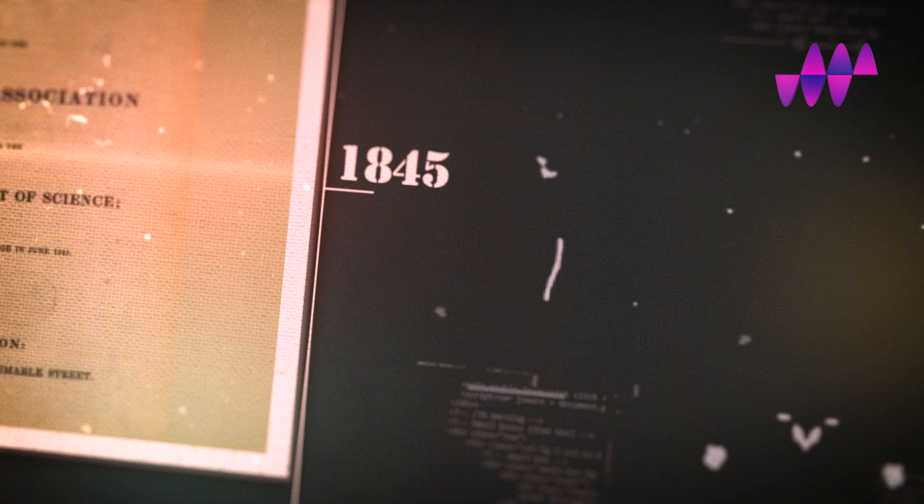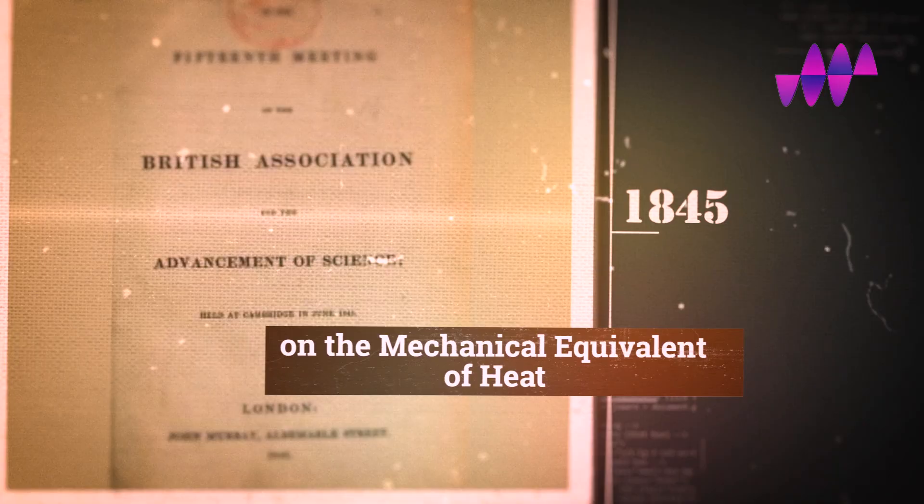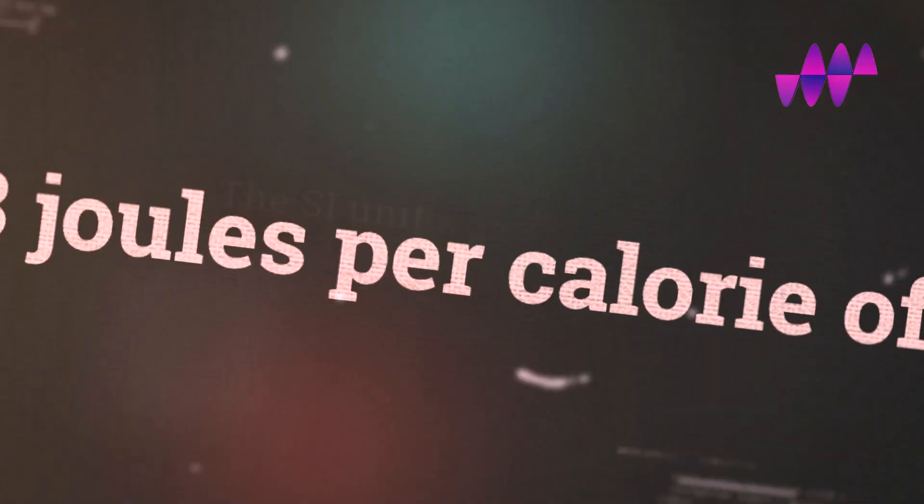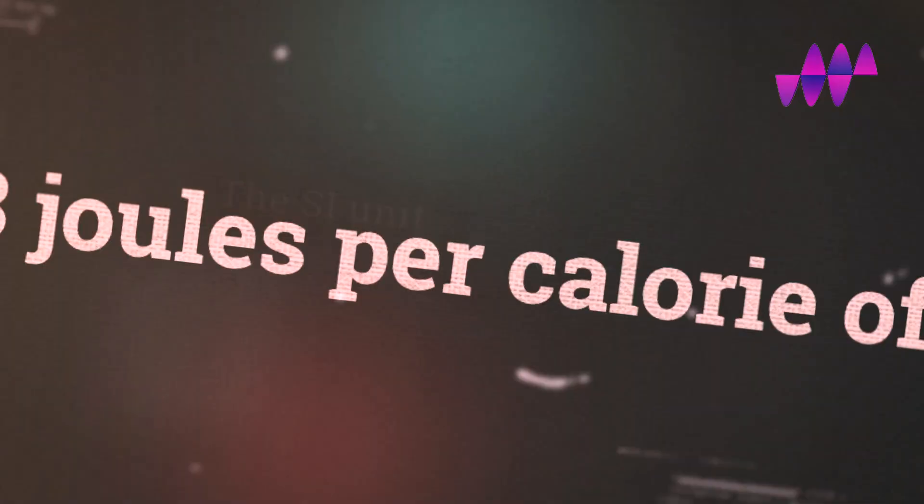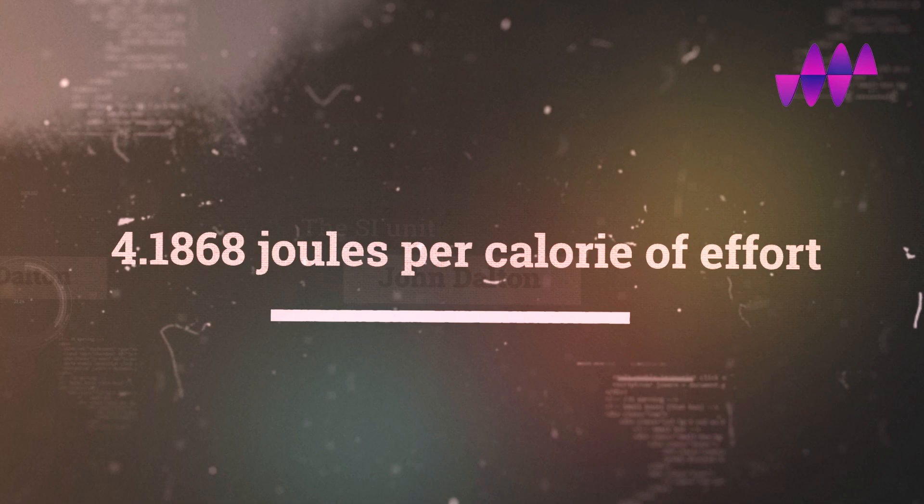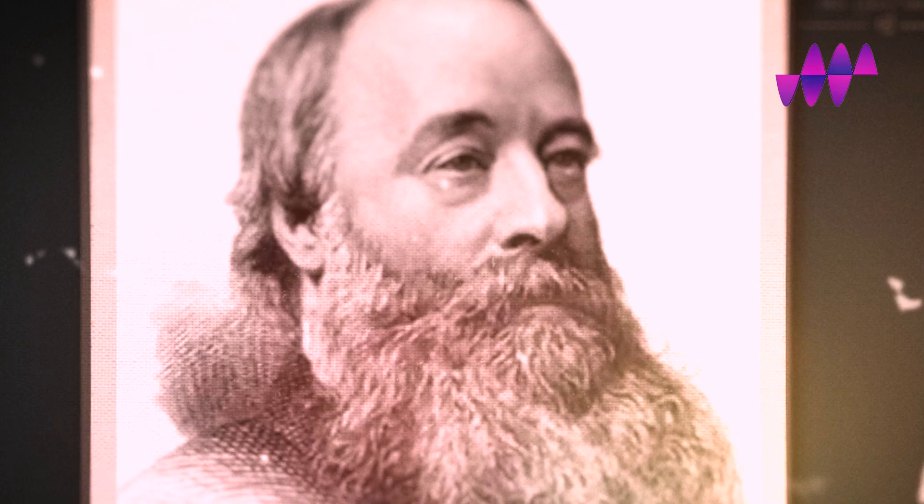In 1845, he delivered his paper on the mechanical equivalent of heat to the British Association in Cambridge. Joule computed this as 4.1868 joules per calorie—the energy required to raise the temperature of one gram of water by one kelvin.